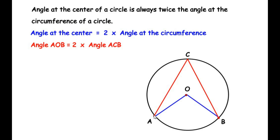We have drawn a circle with center O, with two points A and B on the circle forming an angle at center O, and the same two points form an angle at the circumference at point C. The theorem states that the angle at the center is always twice the angle at the circumference. For example, if the angle at the center is 40 degrees, then the angle at the circumference is exactly half — 20 degrees. Conversely, if the angle at the circumference is 20 degrees, then the angle at the center is 2 times 20, which gives 40 degrees.